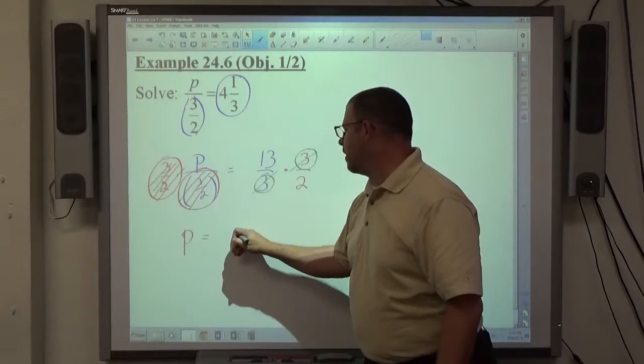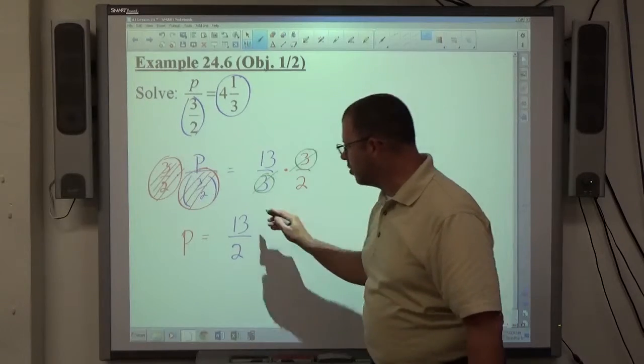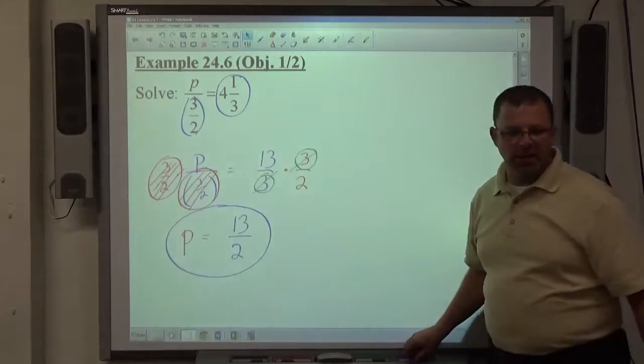13 times the leftover 1 is 13. 1 times 2 is equal to 2. 13 over 2, once again, an improper fraction final answer.